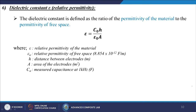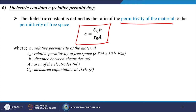The dielectric constant, or relative permittivity epsilon, is defined as the ratio of the permittivity of the material to the permittivity of free space. The equation is: ε = C₀h / (ε₀A), where ε is the relative permittivity, ε₀ is the permittivity of free space (8.854 × 10⁻¹² F/m), h is the distance between electrodes in meters, A is the area of the electrodes in m², and C₀ is the measured capacitance at 1 kHz in farads.